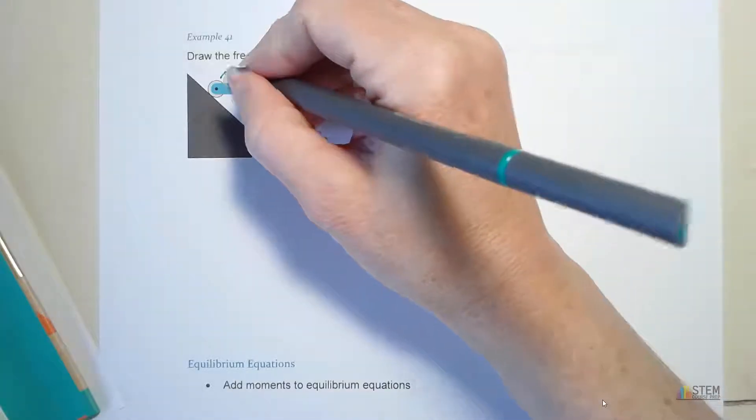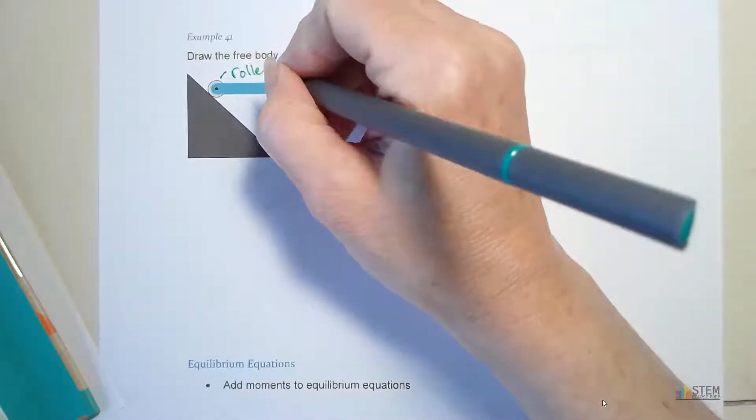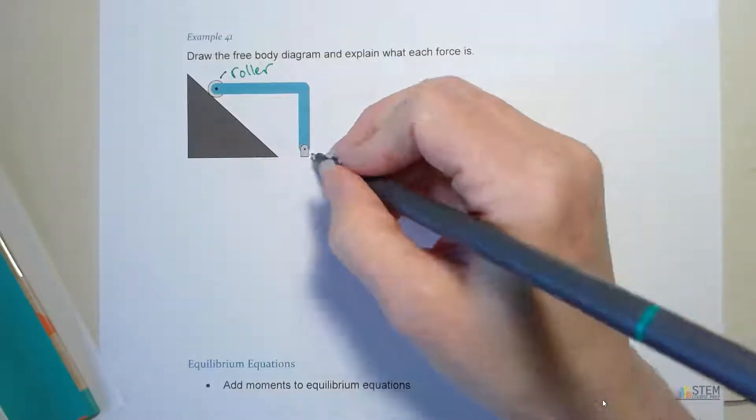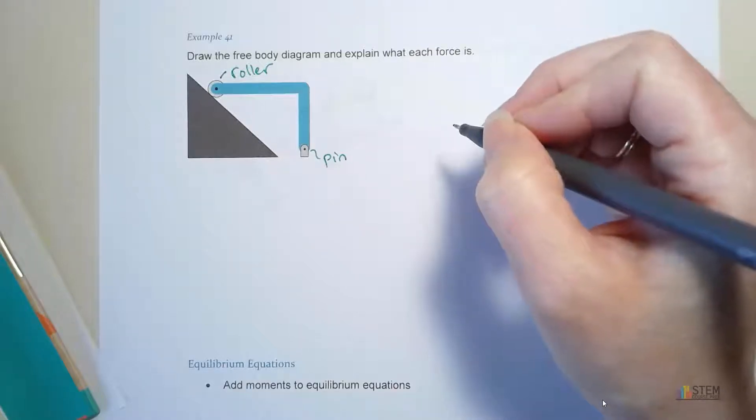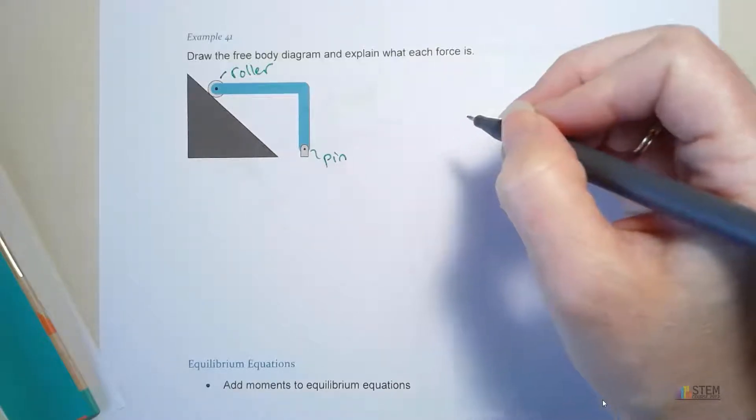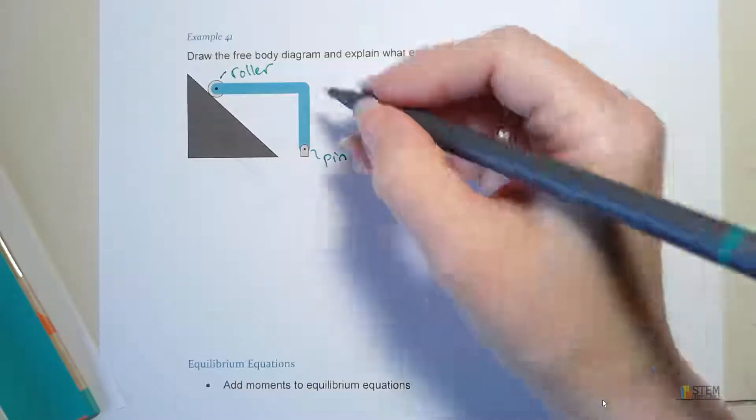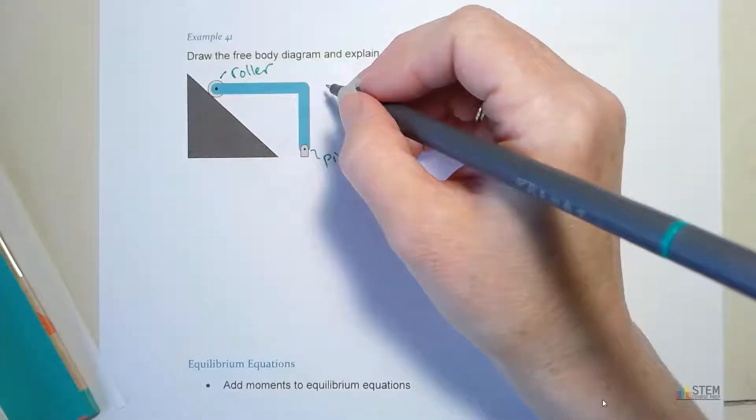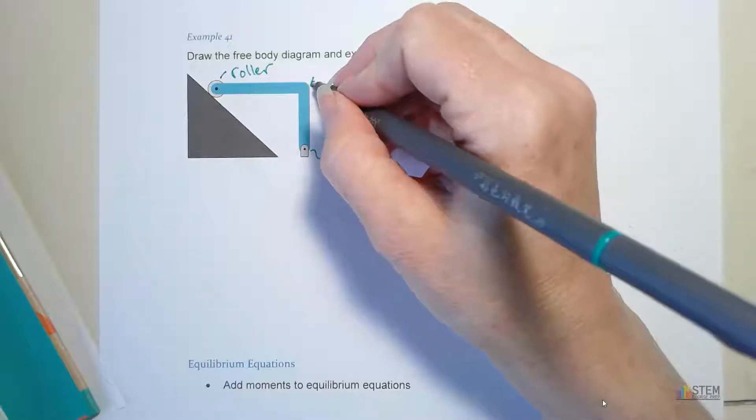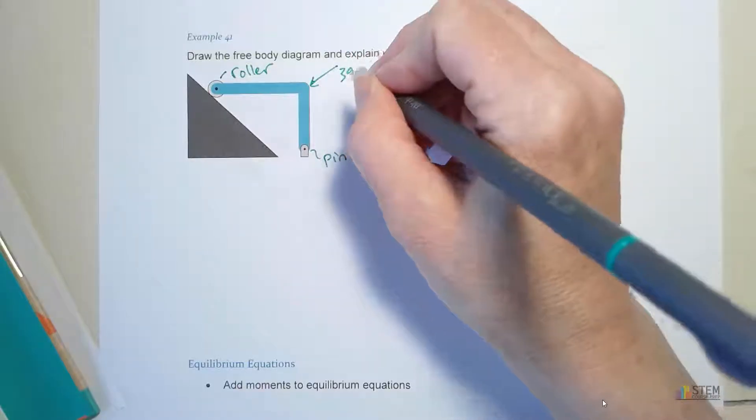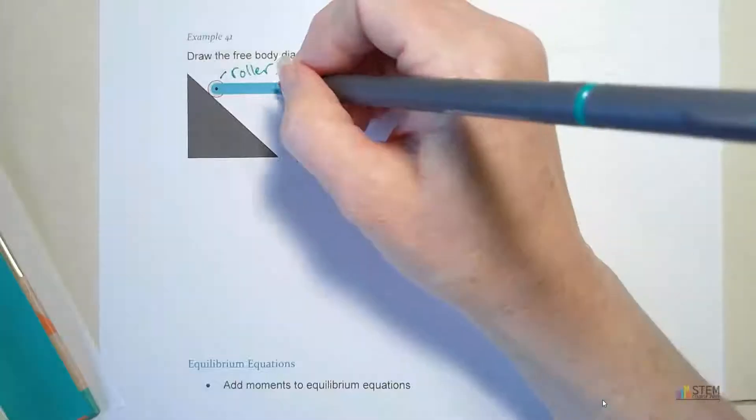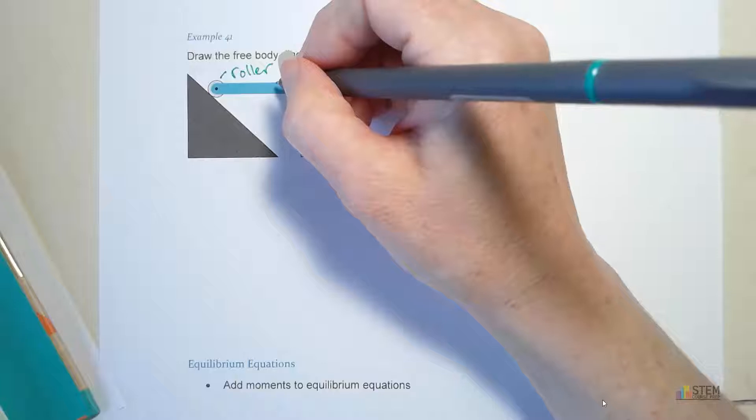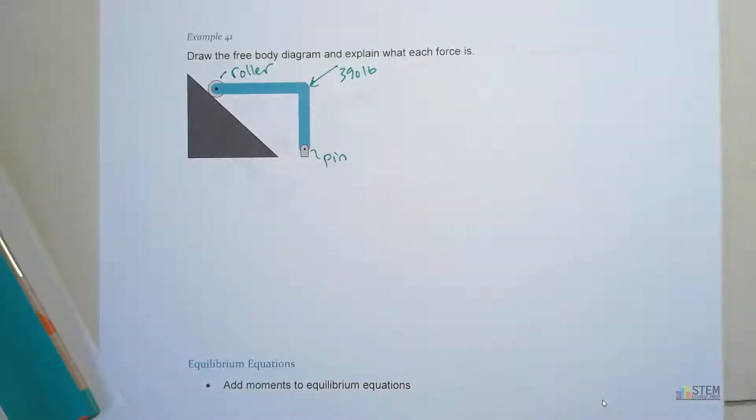So let's look. This right here is going to be a roller. All right, so we've got a roller here. This is a pin. And let's go ahead, I just noticed I left off quite a bit of stuff here on this diagram. Let's put a force here. So let's put 390 pounds. All right, that'll be good enough. We'll leave it at that. Okay, so let's figure out what this thing can do.